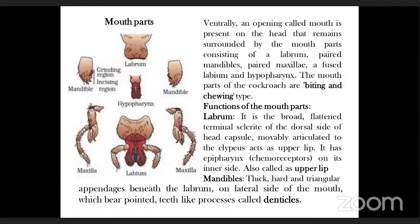Functions of mouthparts. Labrum is broad, somewhat rectangular, flattened, and a terminal sclerite forming the dorsal side of the head capsule. It is movably articulated with the clypeus and is also known as the upper lip. It has an epipharynx on its inner side containing chemoreceptors that test the chemical nature of food.